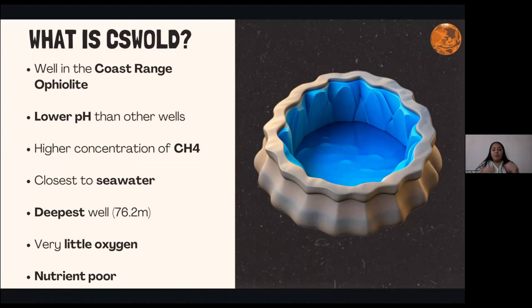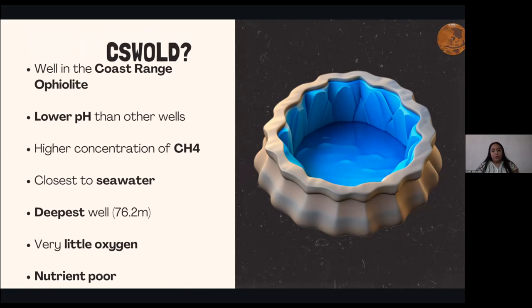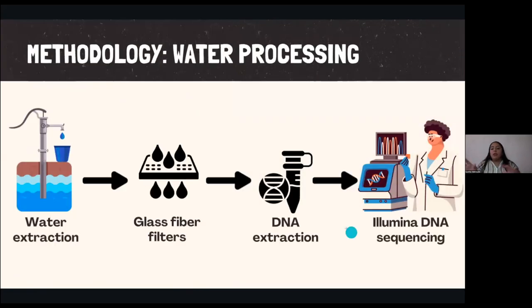This is a well that has special conditions: it has a lower pH than the other wells, a higher concentration of some elements, it's closest to sea water, it is the deepest well, it has very little oxygen, and it's nutrient poor. The general methodology we follow is to extract the water, use a glass fiber filter to filter the water, extract DNA, and perform DNA sequencing.